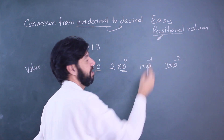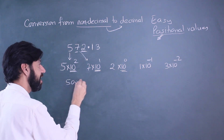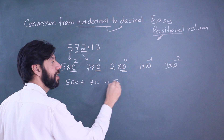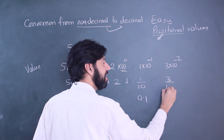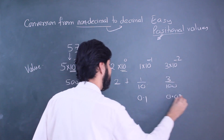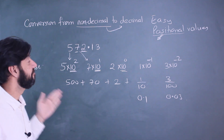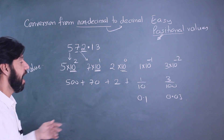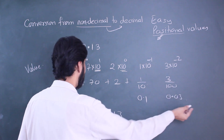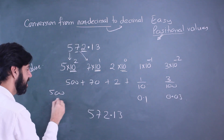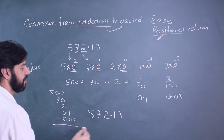So 5 × 100 = 500, 7 × 10 = 70, 2 × 1 = 2, 1 × (1/10) = 0.1, and 3 × (1/100) = 0.03. When you add all of these up, you get 572.13. This confirms the positional value method — you can verify the original number simply by summing all the positional contributions.